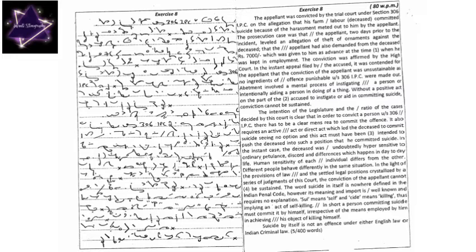In the instant appeal filed by the accused, it was contended for the appellant that the conviction of the appellant was unsustainable as no ingredients of offense punishable under section 306 IPC were made out.